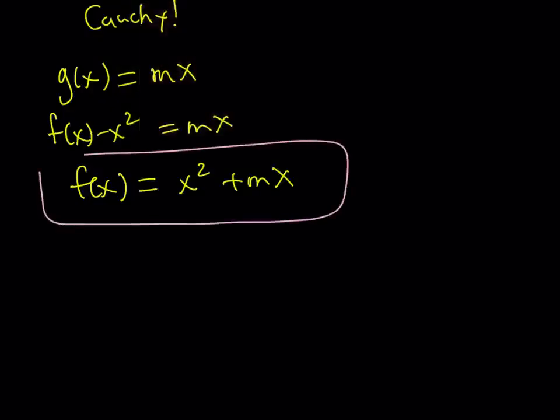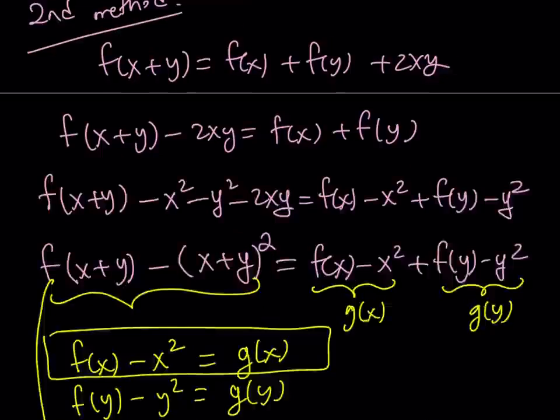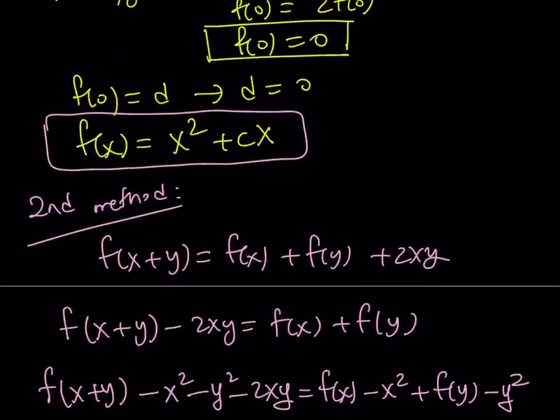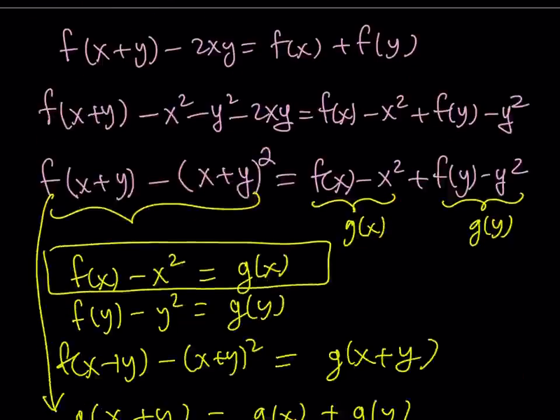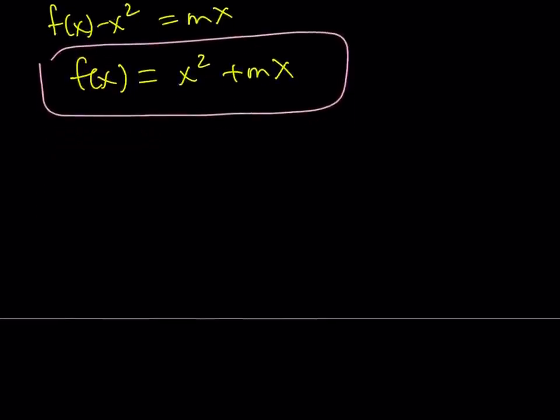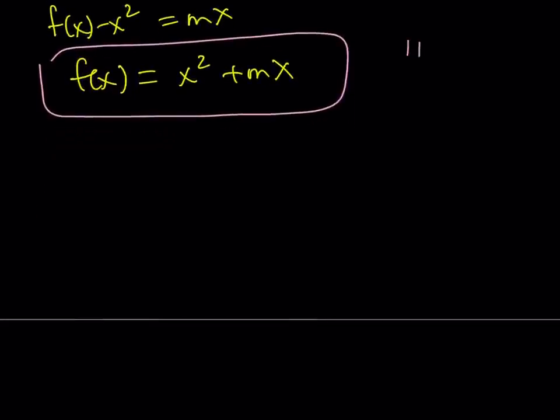And does this look like the first solution? Let's go ahead and check it out. F of x. In the first solution, we found x squared plus cx. c is a constant. m is a constant. So, they're good. And this brings us to the end of this video. Thank you for watching. I hope you enjoyed it. Please let me know. Don't forget to comment, like, and subscribe. I'll see you tomorrow with another video. Until then, be safe. Take care.